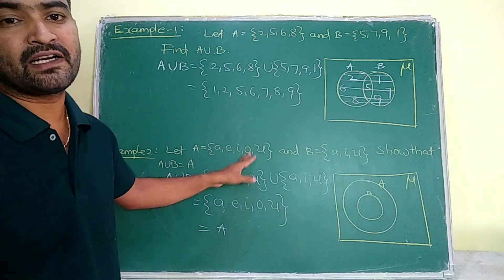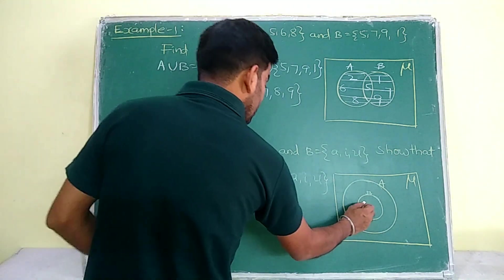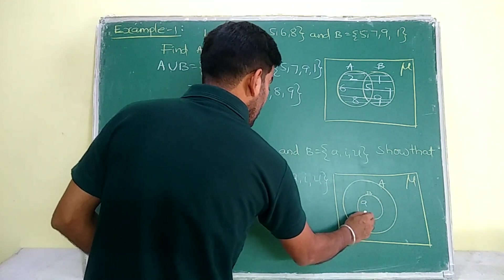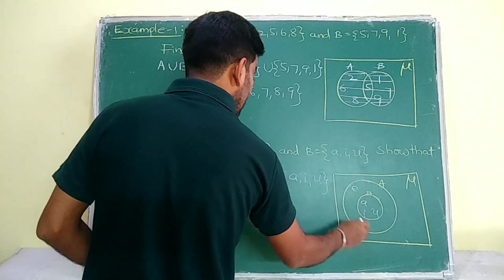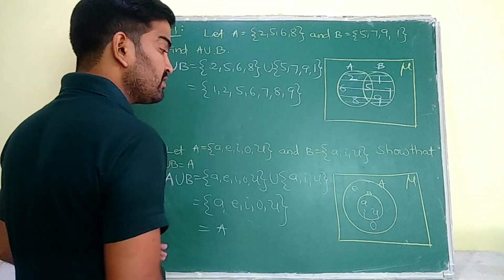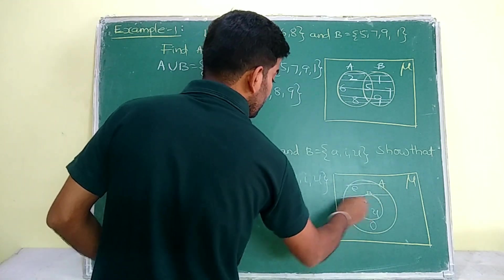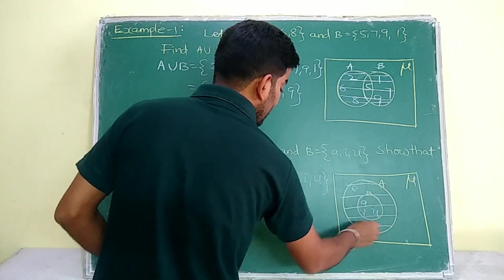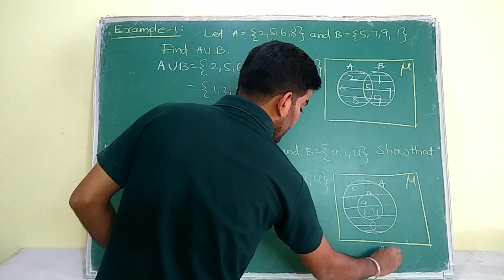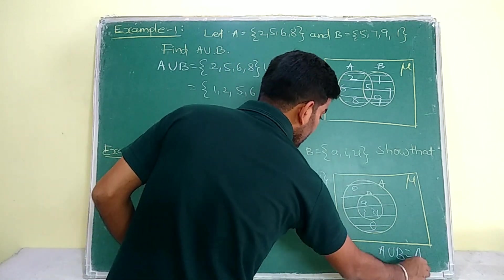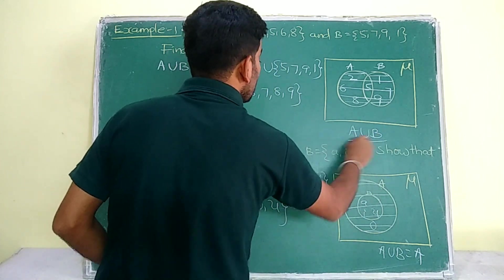If you ask us to draw the Venn diagram, write the common elements first: A, I, U. The elements left in A are E, O. By shading A and B, I obtained A. A union B is equal to A.